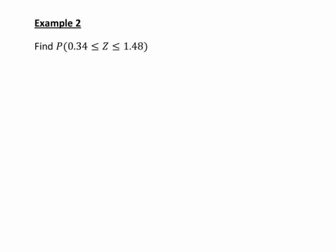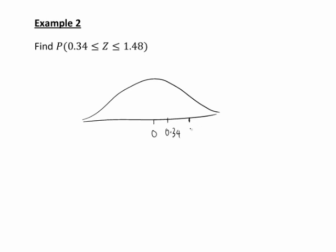Another case that requires a bit of thought is when you want the probability of z being between two values. Here we want the probability of z being between 0.34 and 1.48. Let's draw a rough sketch: the standard normal curve has a centre of zero, 0.34 is somewhere to the right of centre, 1.48 is further right, and we're wanting the area in between those two values.